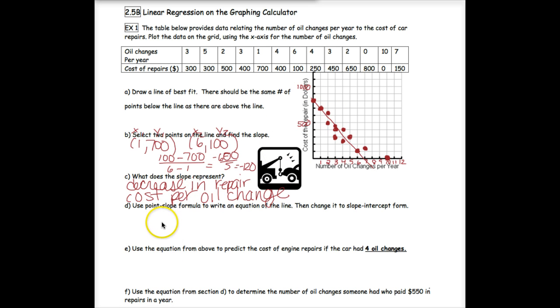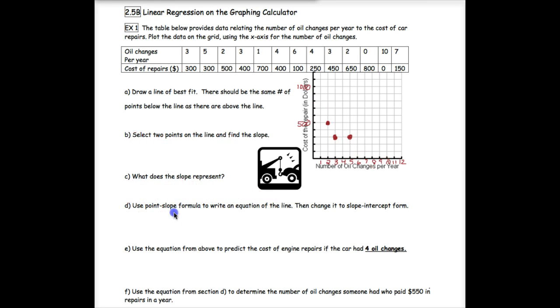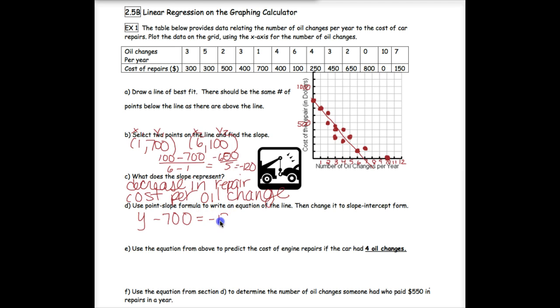So now we need to write the equation of the line, just like we did yesterday. I always use point slope. If you want to pick an xy and plug it in to find b, you can go directly to slope intercept if you prefer. I'm going to do y minus y1, so y minus 700 equals negative 120 times (x minus x1). Distribute: negative 120x plus 120 is what my y minus 700 equals. Now add the 700 so that we can get the y alone. That gives me y equals negative 120x plus 820.